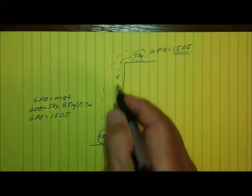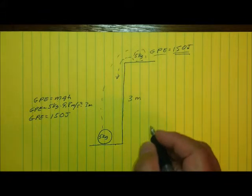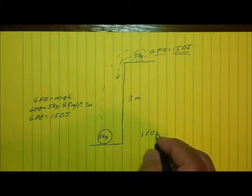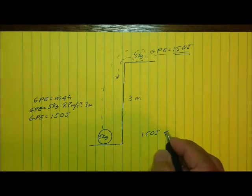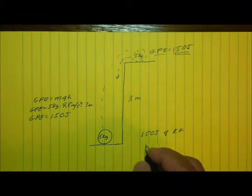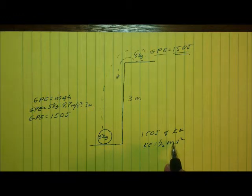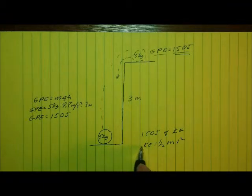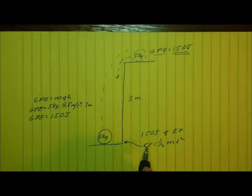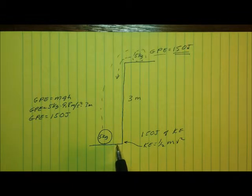And while it's accelerating and its velocity is increasing as it falls, that 150 joules of gravitational potential energy is turning into 150 joules of kinetic energy. Remember the equation for kinetic energy. Kinetic energy equals one half mv squared. So as the velocity of the mass increases, it's converting the gravitational potential energy into kinetic energy. And by the time it reaches the floor, the gravitational potential energy, 150 joules of gravitational potential energy have been completely changed into 150 joules of kinetic energy.